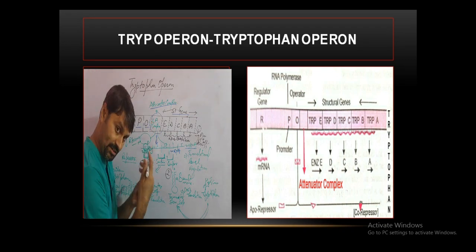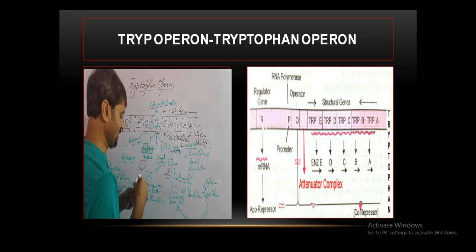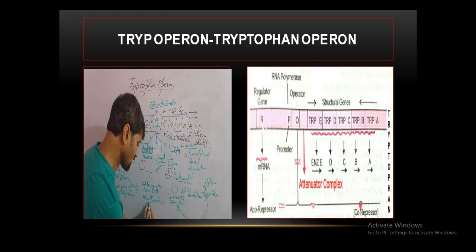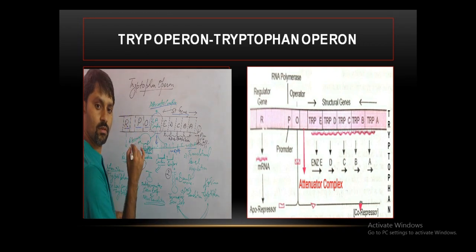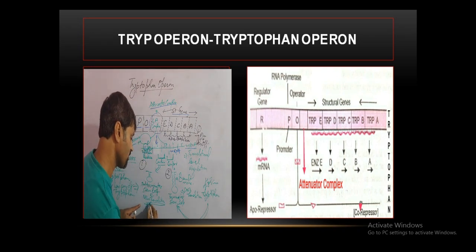The anti-terminator stem loop does not allow termination — it allows translation of the structural gene.